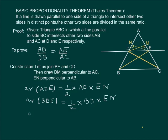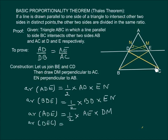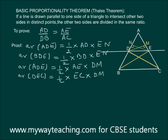Area of triangle DEC will be half into EC into DM. We now take the ratio of area of triangle ADE by area of BDE in which half gets cancelled, EN gets cancelled, and we get AD by BD.